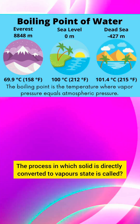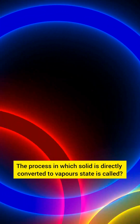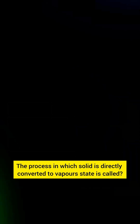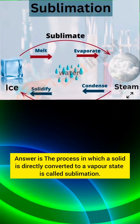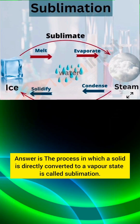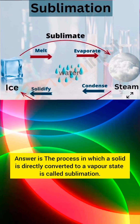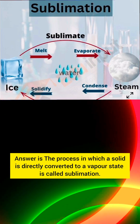The process in which a solid is directly converted to a vapor state is called? Answer: The process in which a solid is directly converted to a vapor state is called sublimation.